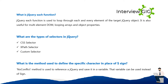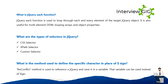What is the jQuery each() function? The jQuery each() function is used to loop through each and every element of the target jQuery object. It is also useful for multi-element DOM looping, arrays, and object properties. What are the types of selectors in jQuery? CSS selector, XPath selector, and custom selector.